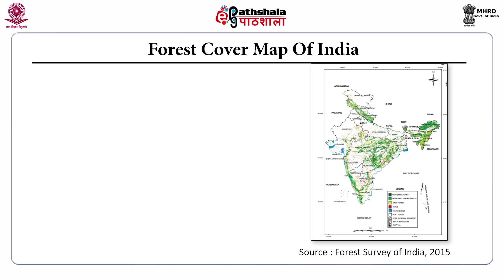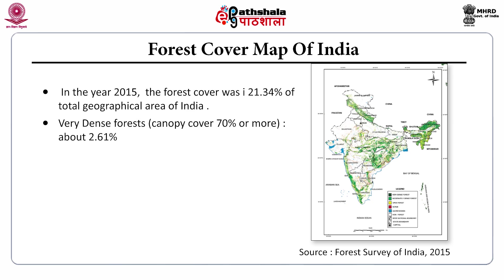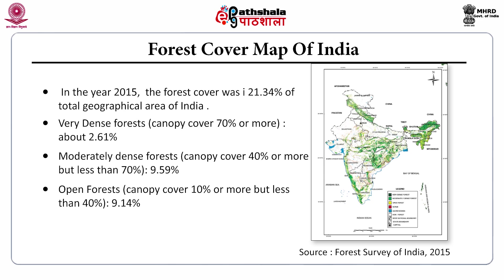The forest cover map of India for the year 2015 shows that forest cover was 21.34% of the total geographic area of India. Very dense forests with canopy cover of 70% or more accounted for 2.61%. Moderately dense forests with canopy cover of 40% or more but less than 70% accounted for 9.59%. Open forests with canopy cover of 10% or more but less than 40% formed 9.14% of the forest.